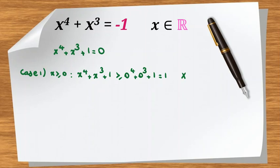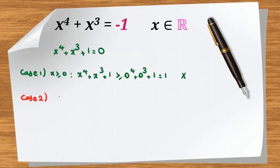Case 2: if x is negative. For large negative x, the x cubed term and the constant 1 are both non-zero parts of the equation. Let's consider x less than 0 but greater than or equal to negative 1.